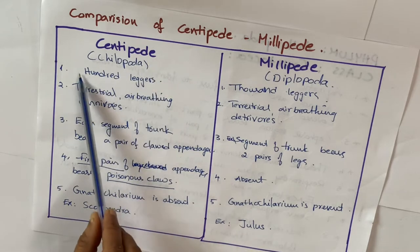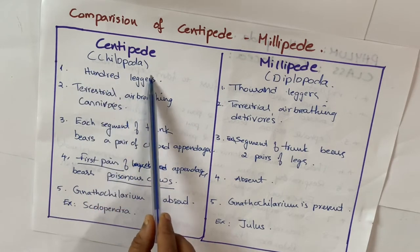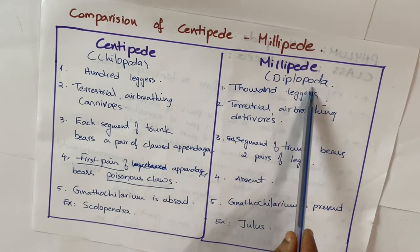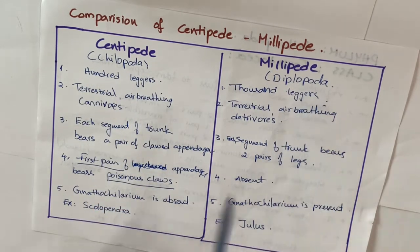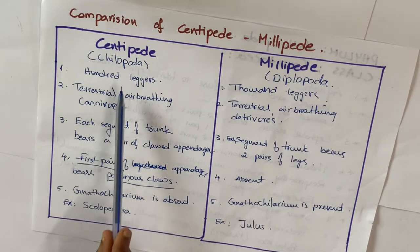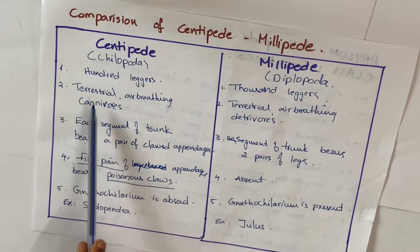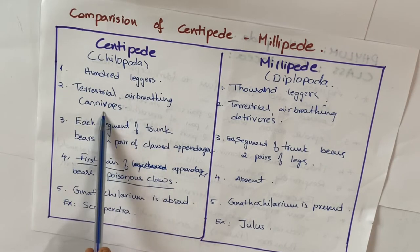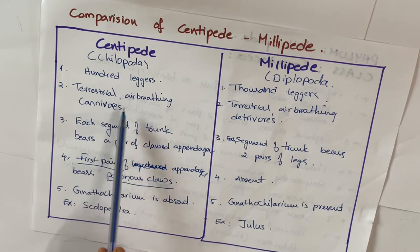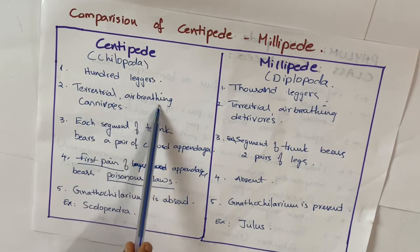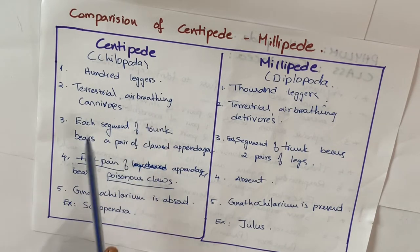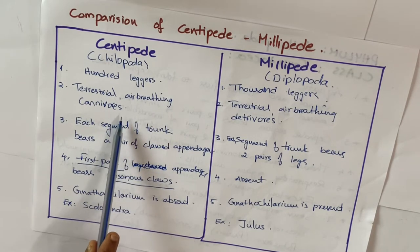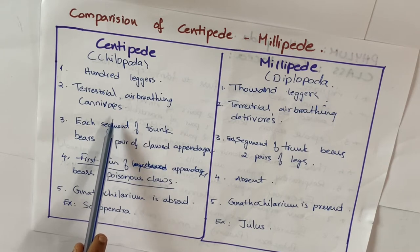Centipedes are also known as Chilopoda and millipedes are known as Diplopoda. Centipedes are terrestrial, air-breathing, and carnivores. Terrestrial means they live on land, air-breathing means they breathe air.